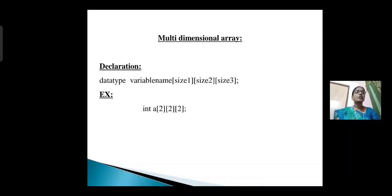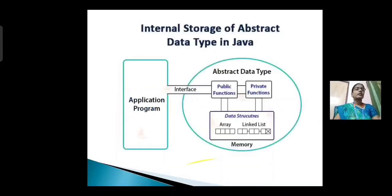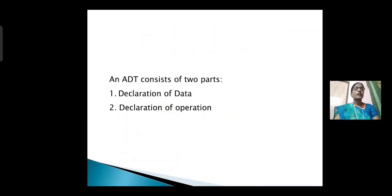What is abstract data type? Abstract data type (ADT) is a set of data values and associated operations that are independent of implementation. The strength of an ADT is that the implementation is hidden from the users. An ADT consists of two parts: declaration of data and declaration of operations. If you look at this diagram, internal storage of abstract data type in Java is the application program interface, with public functions and private functions mapping to data structures such as arrays and linked lists.